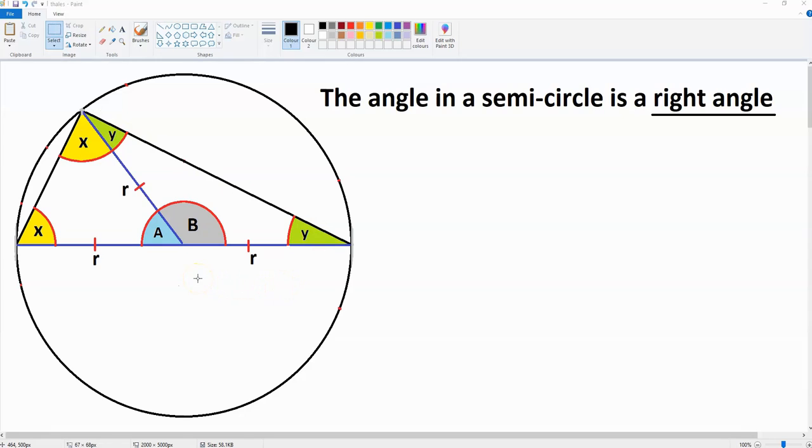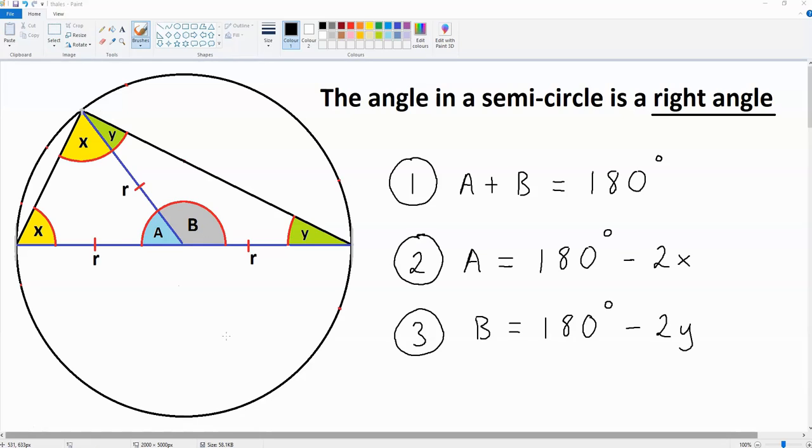Now the second thing you need to know about this diagram is that a plus b is going to be equal to 180 degrees. That is because halfway around a circle is 180 degrees. OK, let's get to the proof.